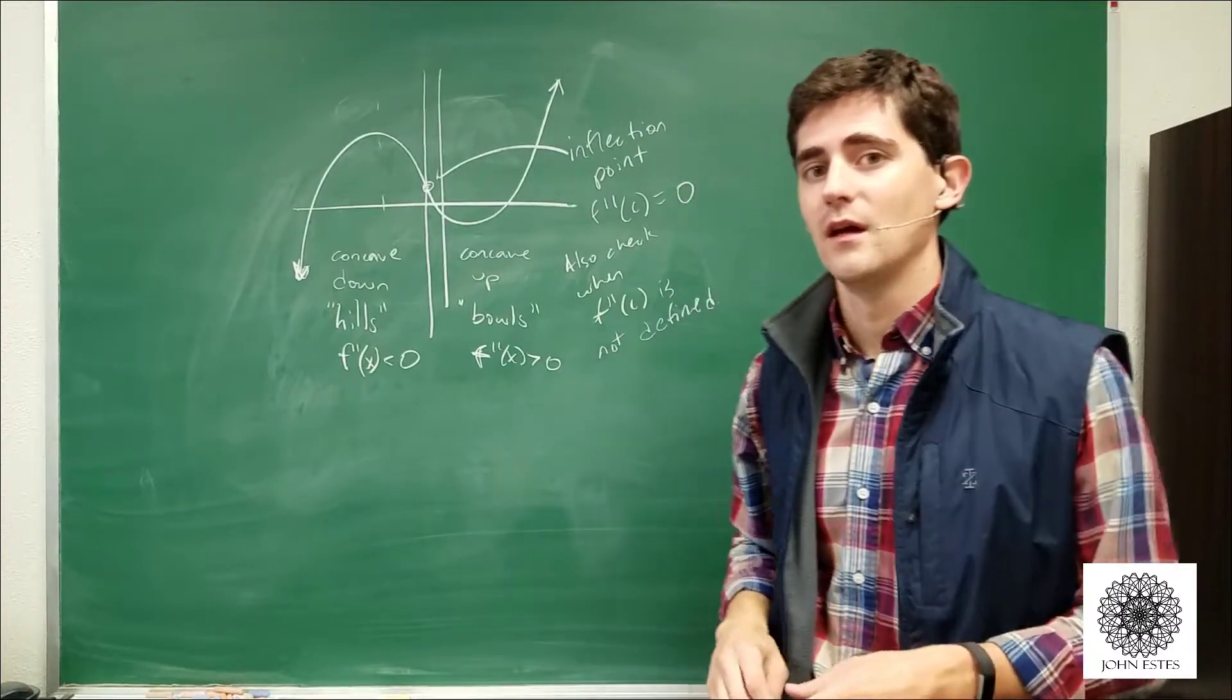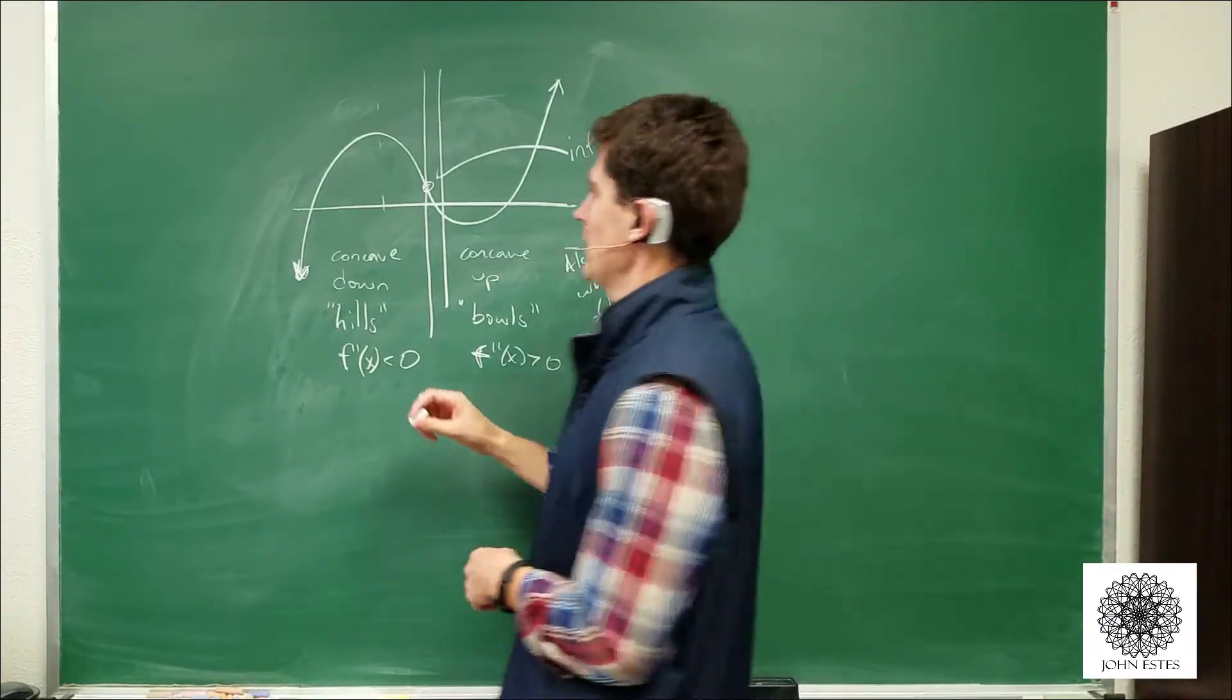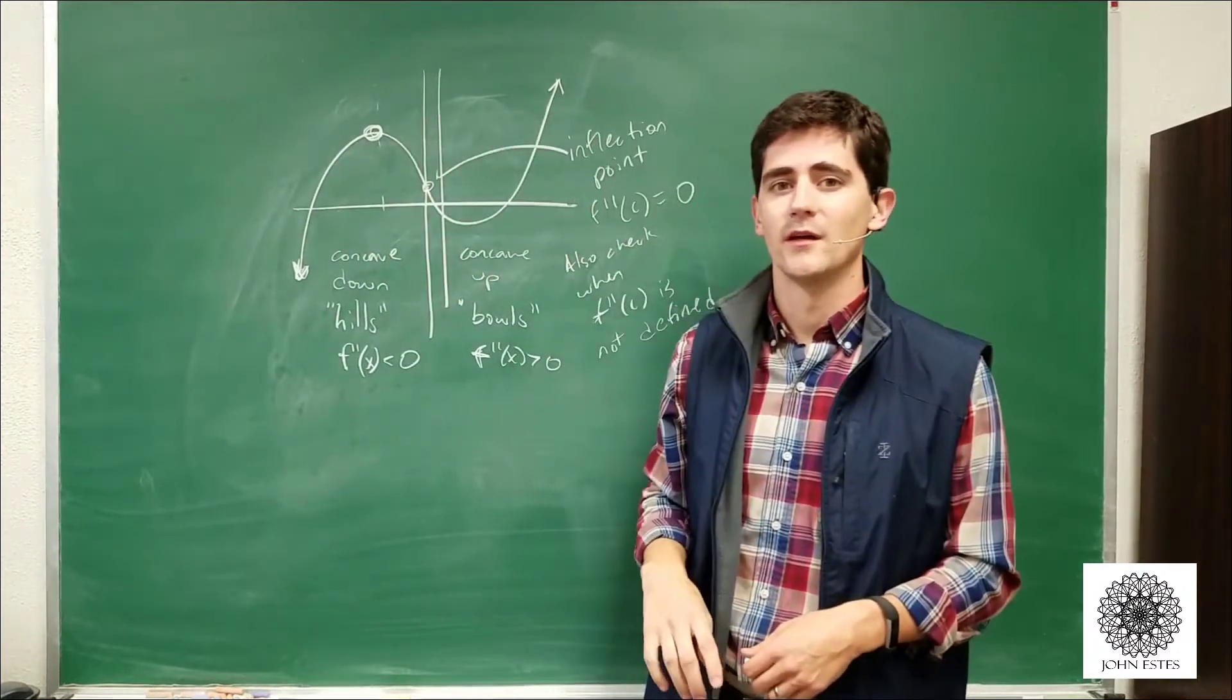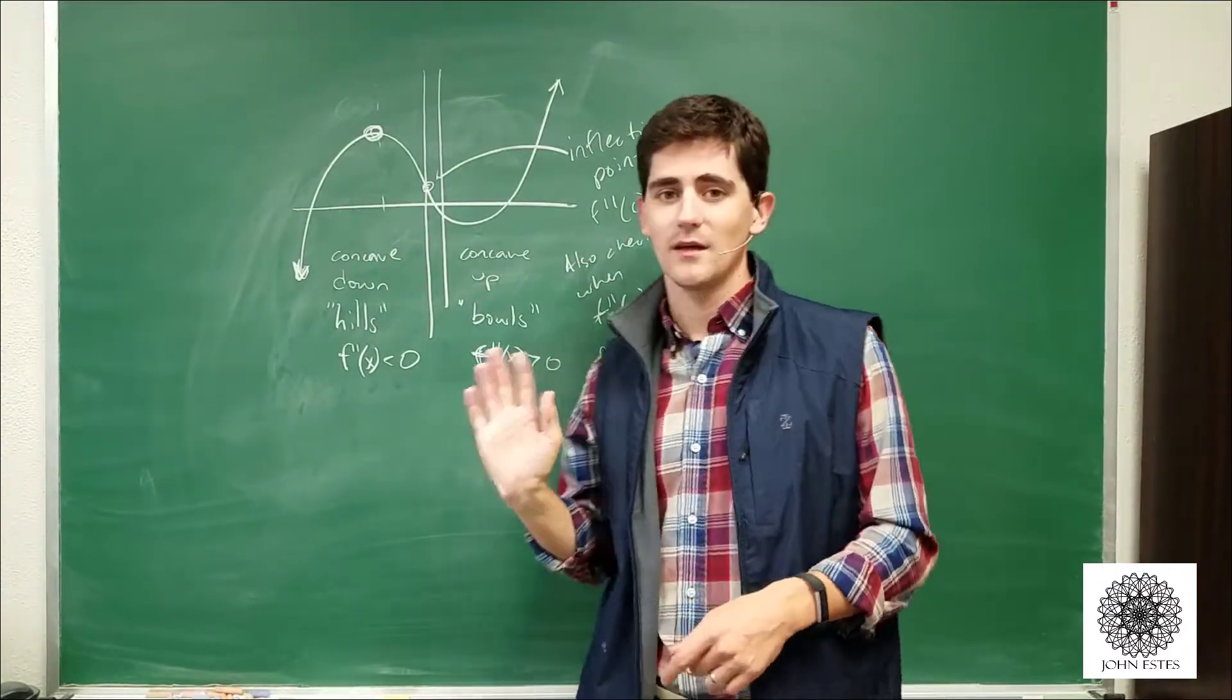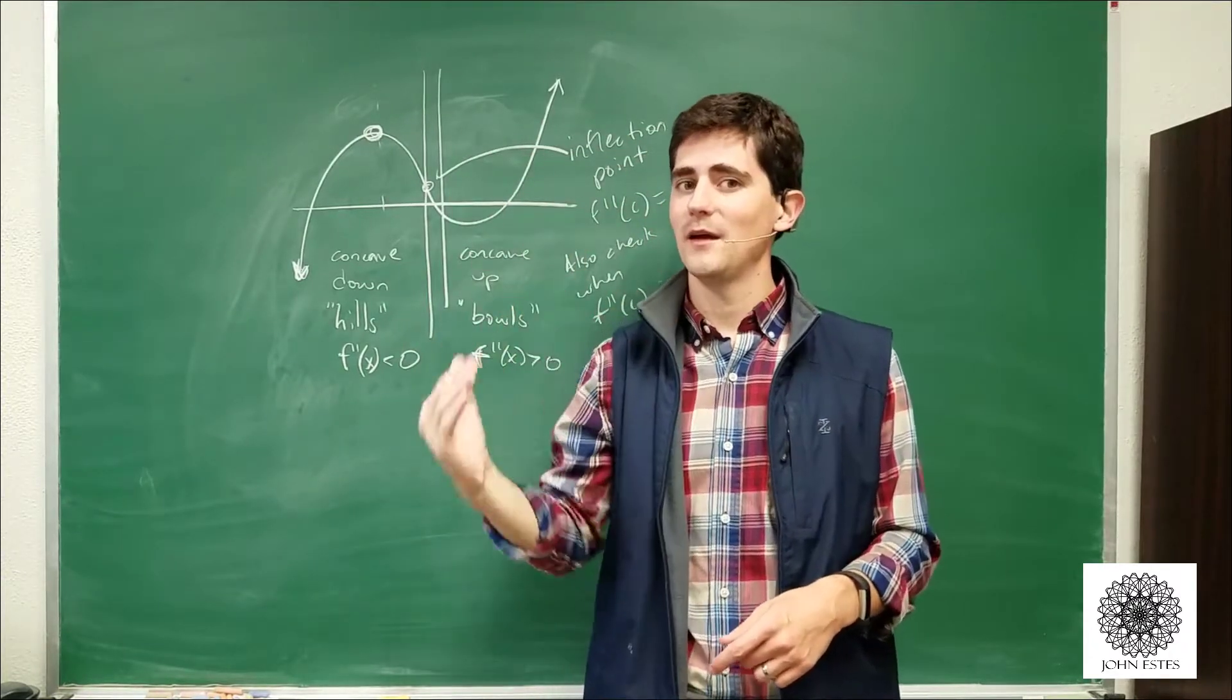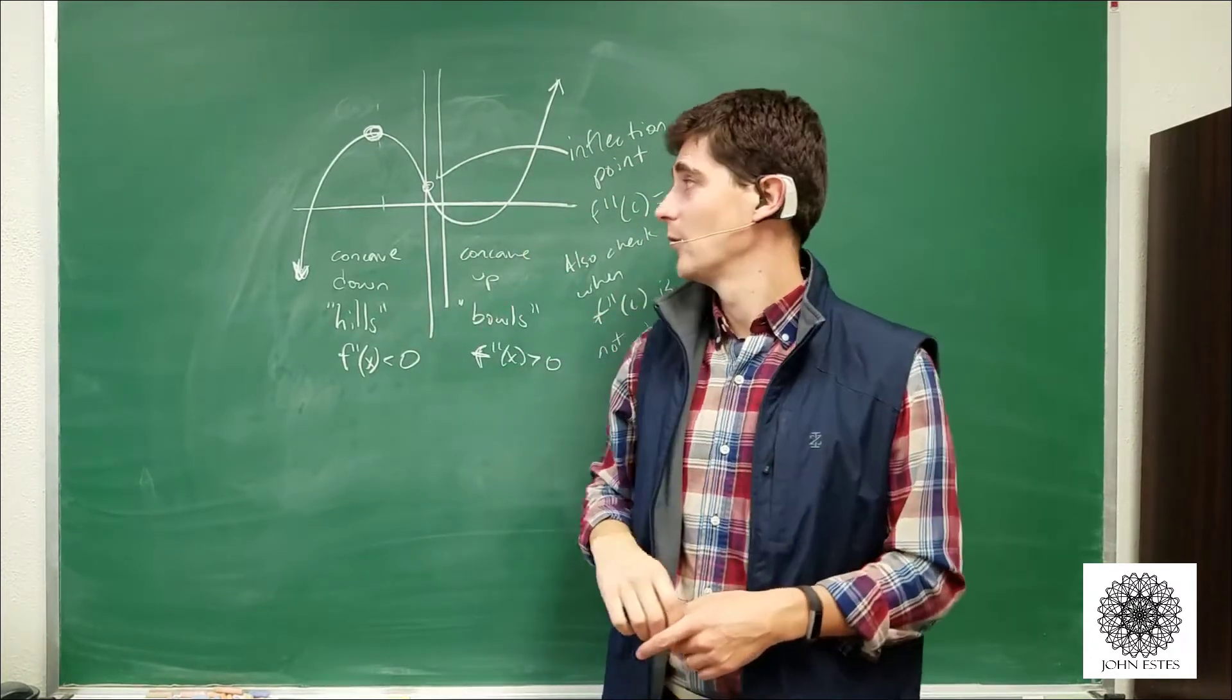trick with the second derivative. The way that works is: I have a critical point here, I have a critical point there, my first derivative is 0 at that point. But notice the concavity is making a hill. So how can you have a min or a max if you're on a hill? It would have to be a